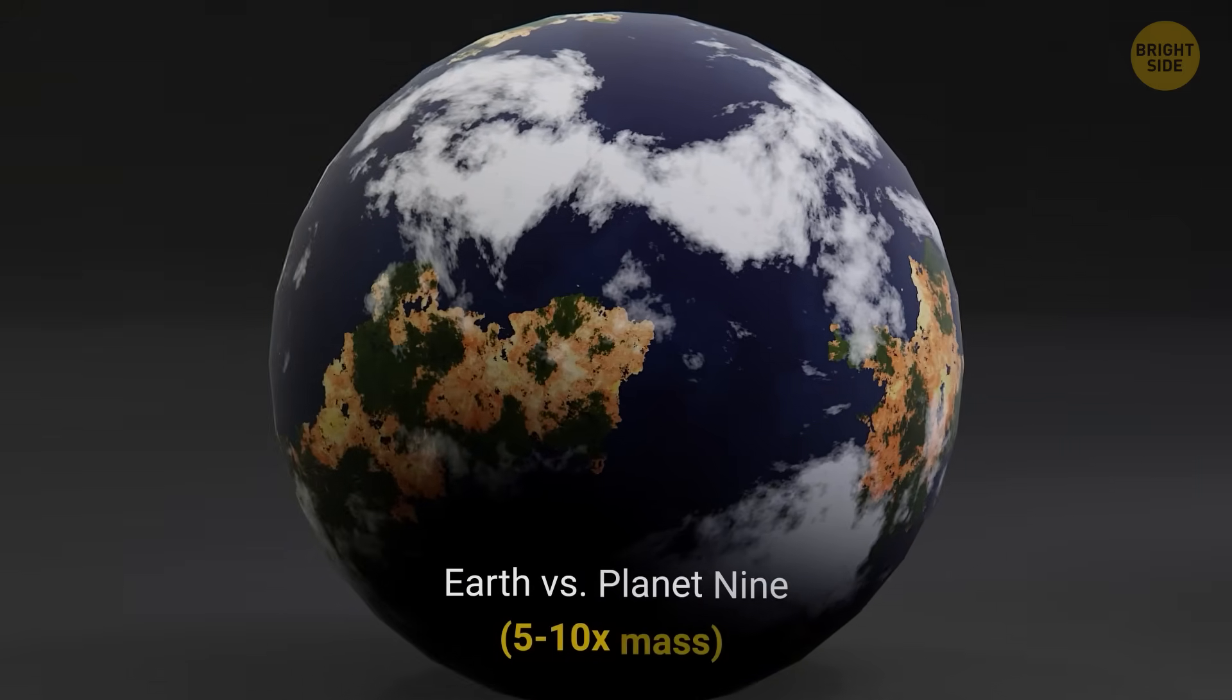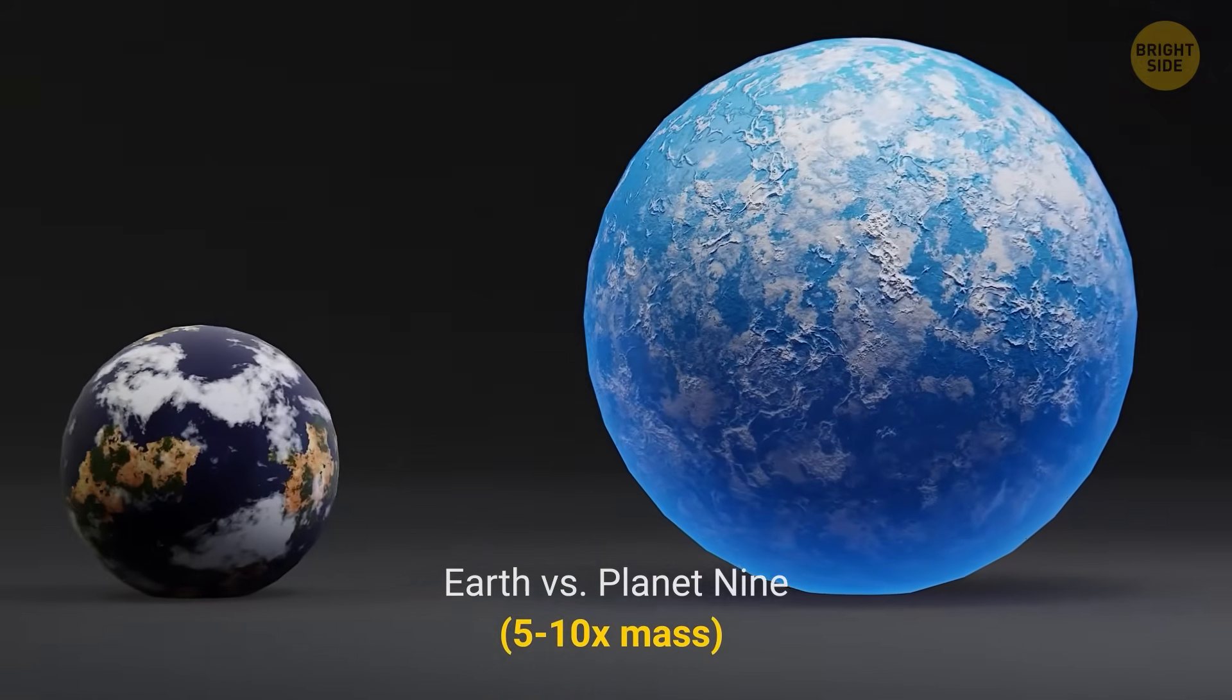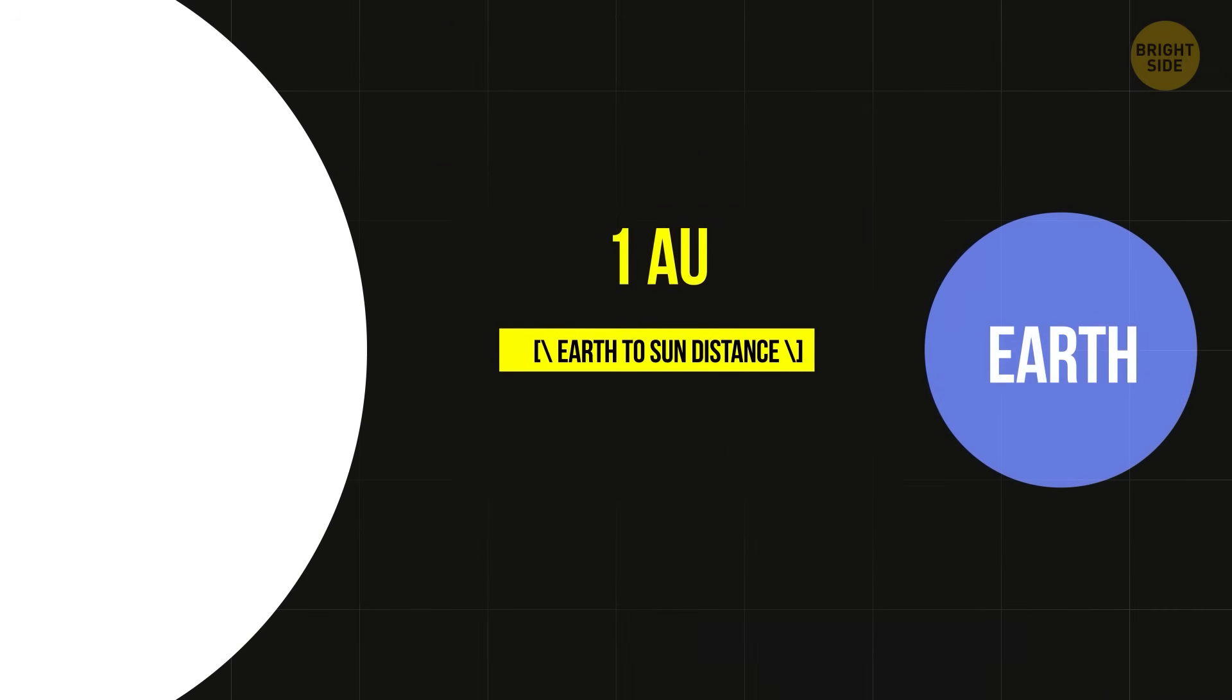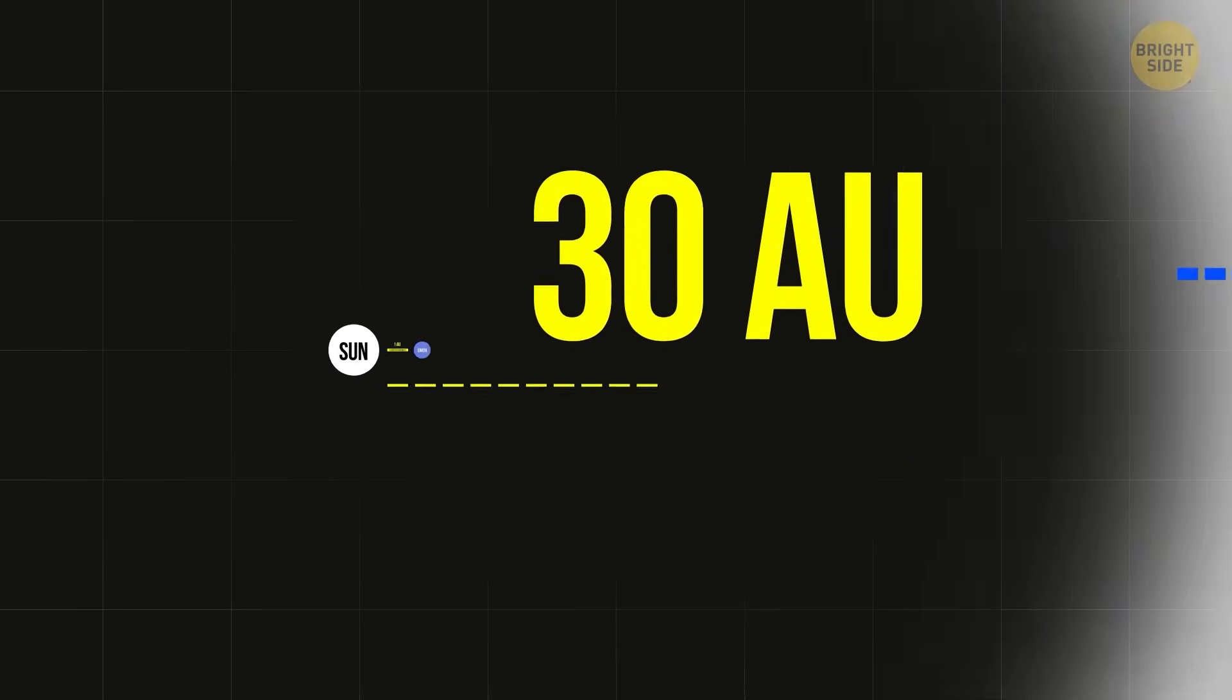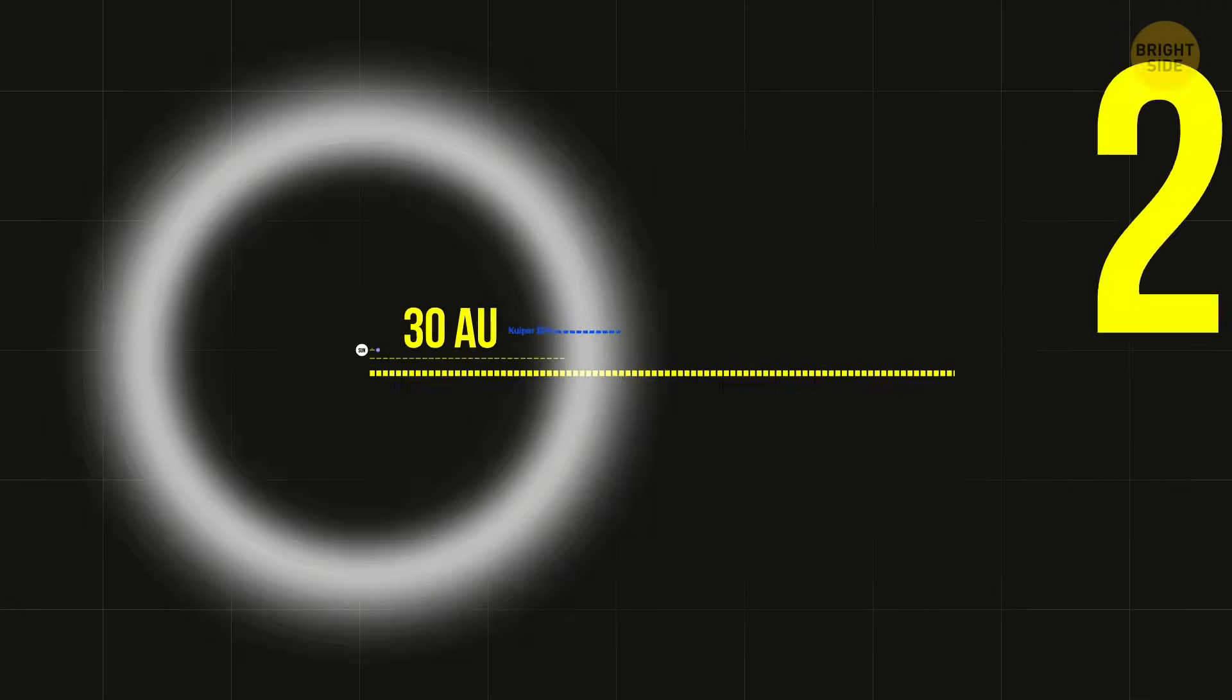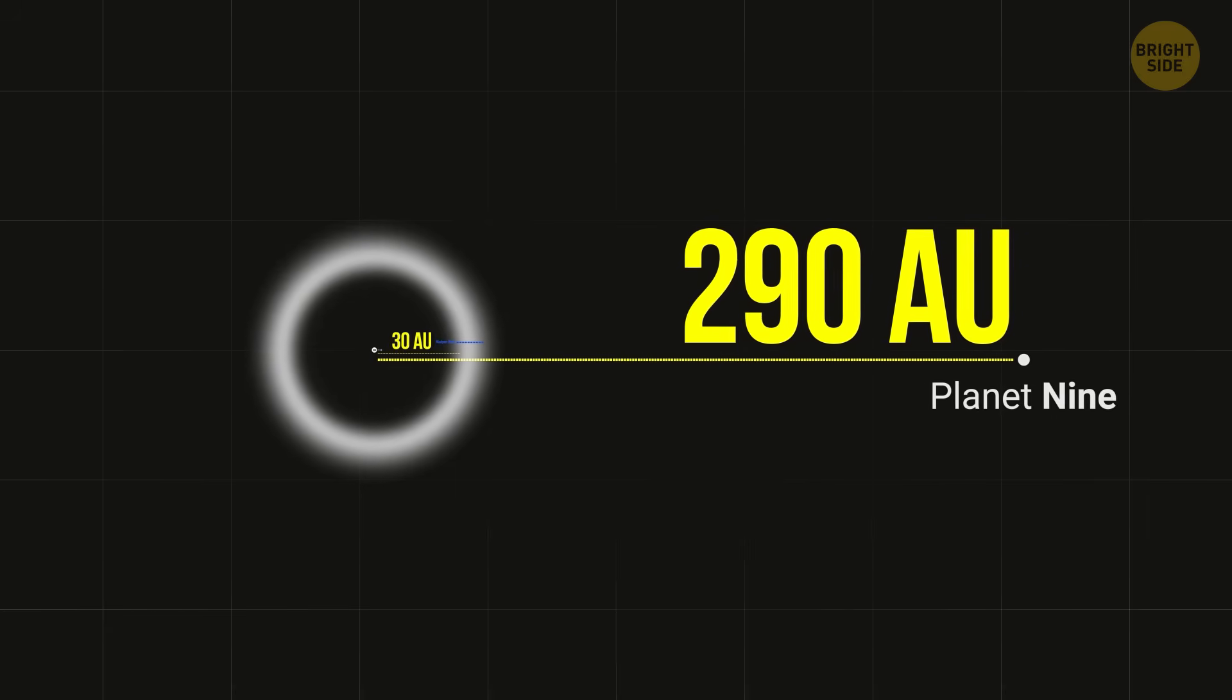If Planet 9 is real, it might be 5 to 10 times heavier than Earth. It would also be super far away, hundreds of times farther from the Sun than Earth is. Over the years, scientists have guessed different distances for its orbit, and the newest guess in 2025 says it could be about 290 times farther from the Sun than Earth.